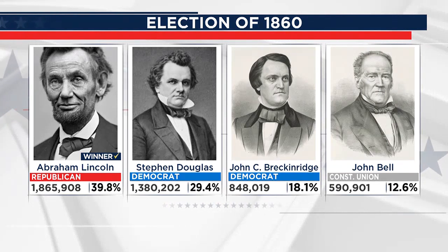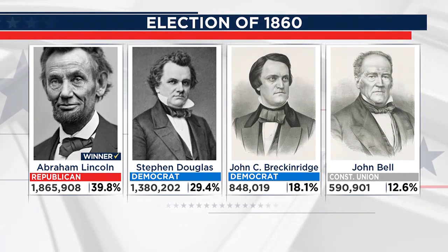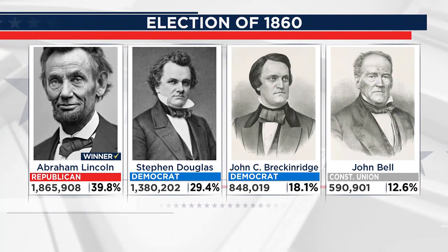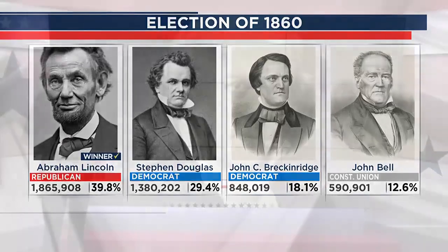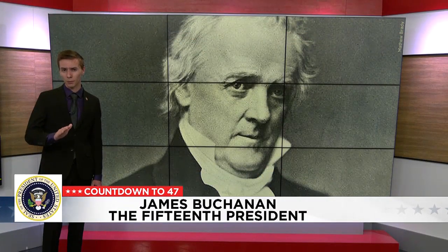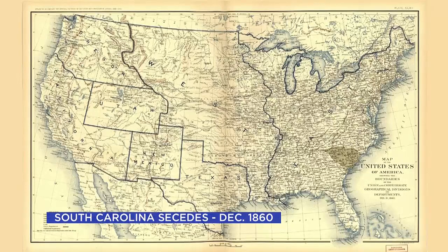A four-way contest ensued, and Republican candidate Abraham Lincoln won the most electoral votes of any candidate, but had less than 40 percent of the total popular vote. In response, southern states threatened secession, while Buchanan pushed for compromise. With no compromise in sight, South Carolina seceded from the Union in December of 1860.